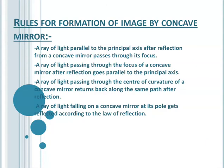There are four important rules for the formation of images by a concave mirror. Rule 1: a ray of light parallel to the principal axis, after reflection from a concave mirror, passes through the focus F. Any ray parallel to the principal axis after reflection always passes through the principal focus.